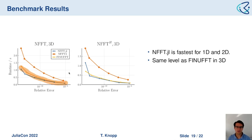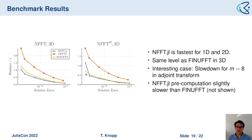In 3D, FiNUFFT and NFFT.jl reach similar performance in both direct and adjoint transformations. NFFT.jl is sometimes a little bit faster. There is one interesting case where NFFT.jl is slower — the reason is still unclear, possibly related to the compiler not emitting efficient code, which might have something to do with tuple length. Regarding pre-computation time, FiNUFFT is still the fastest, and NFFT.jl is a little bit slower but not by much.